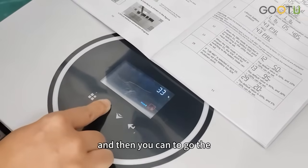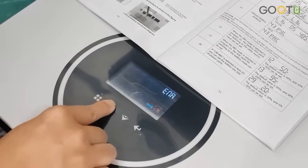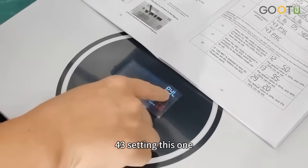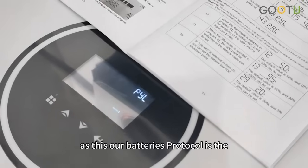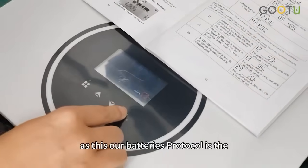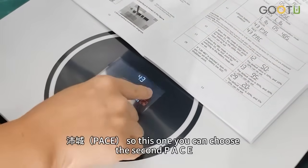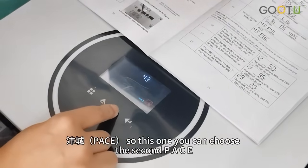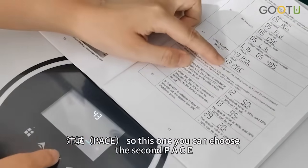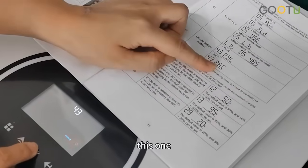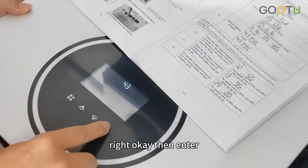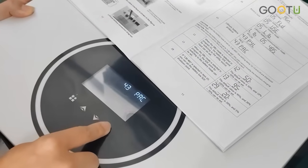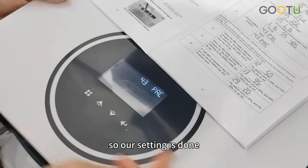And then you can go to the 43 setting. As our battery's protocol is the PACE pattern, so this one you can choose the second, PACE. Enter. So our setting is done.